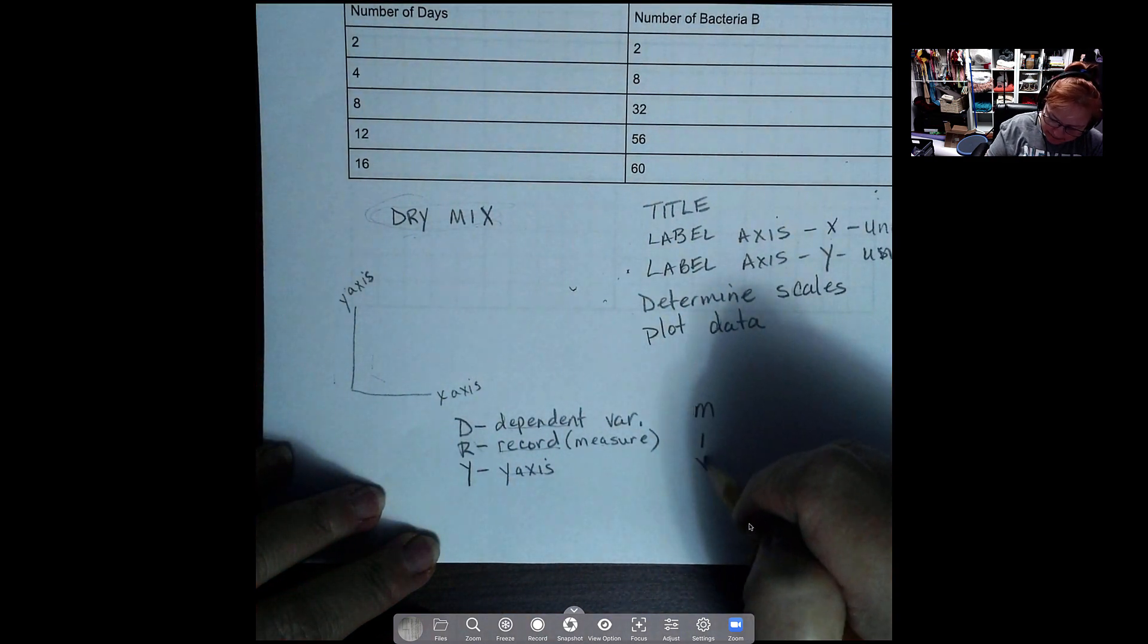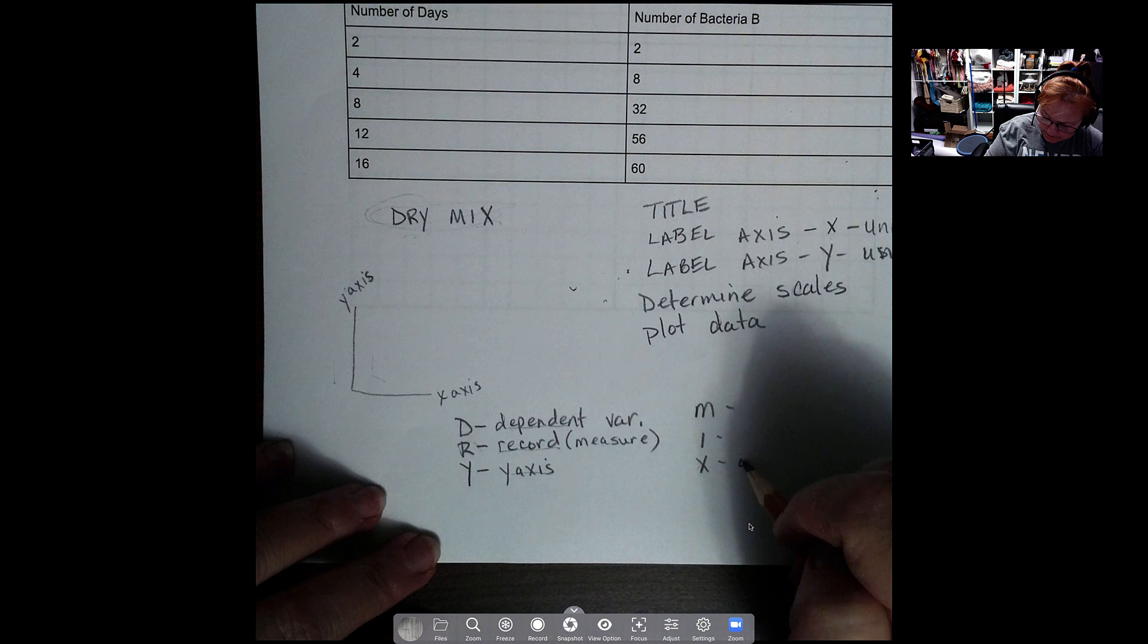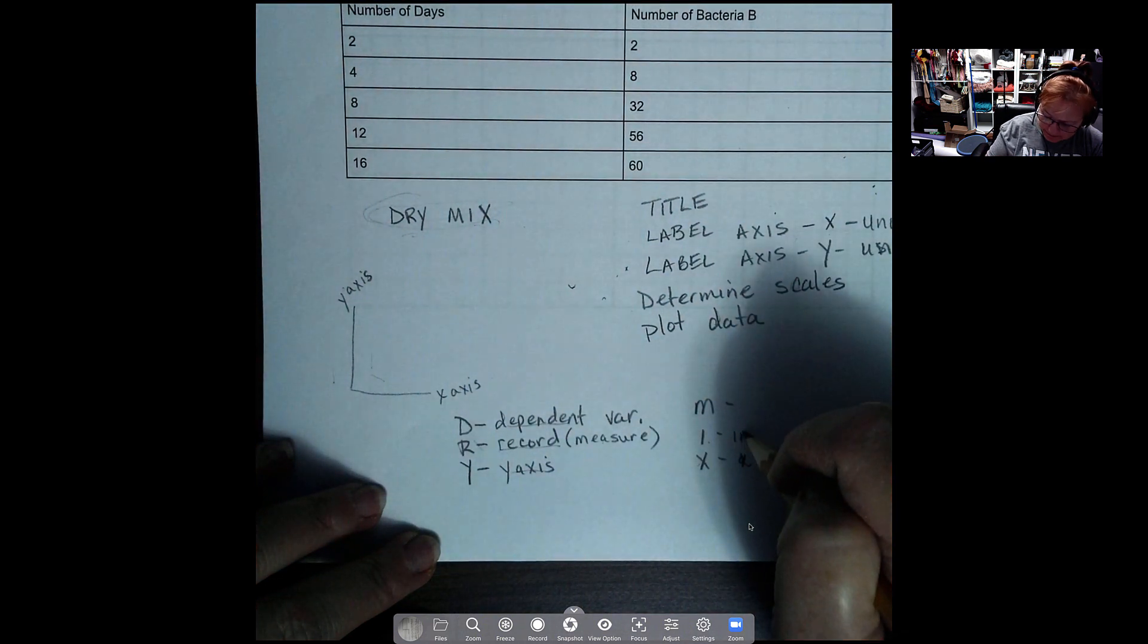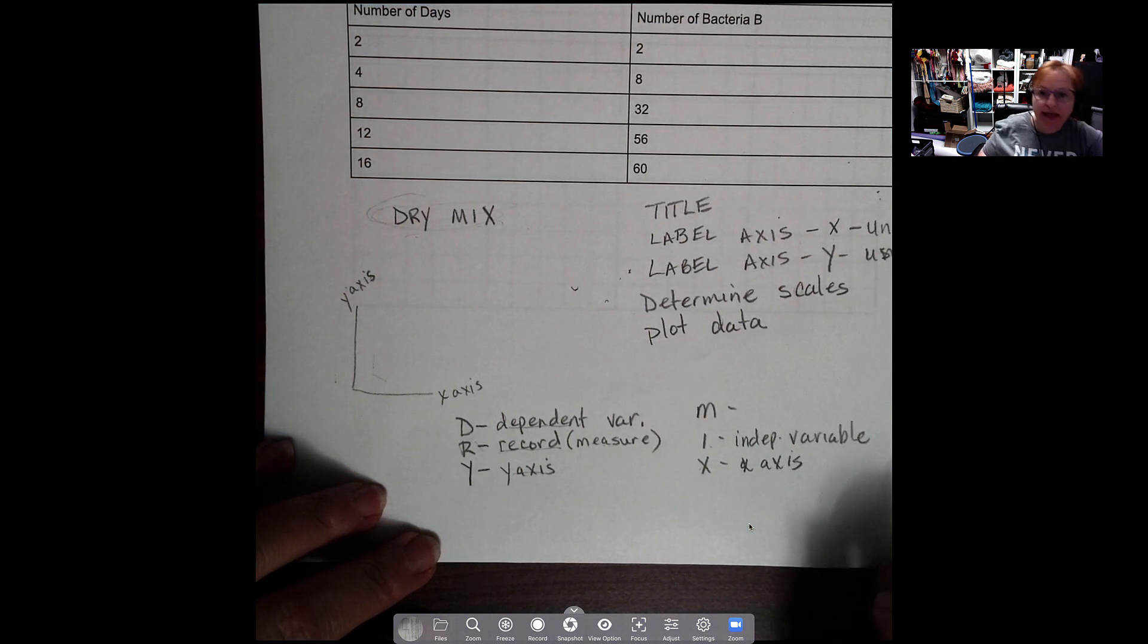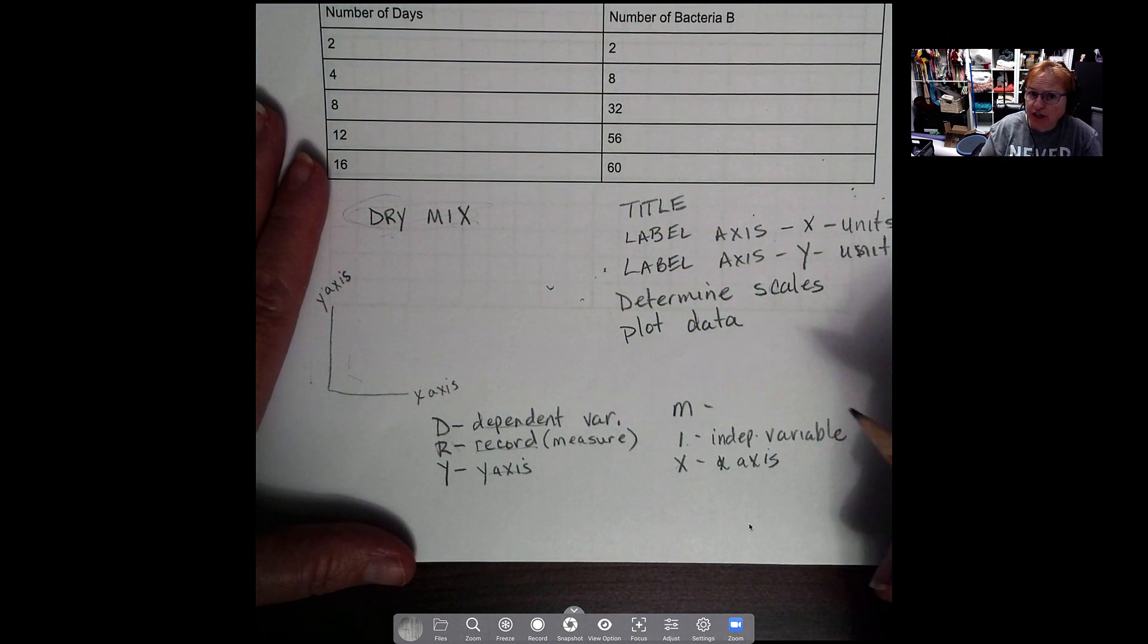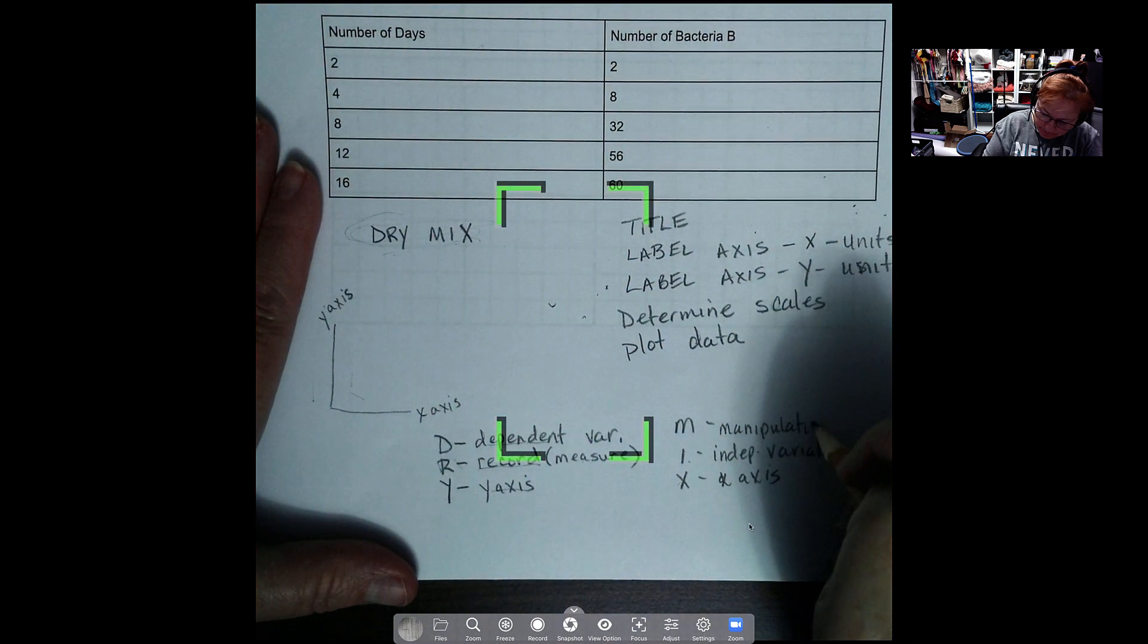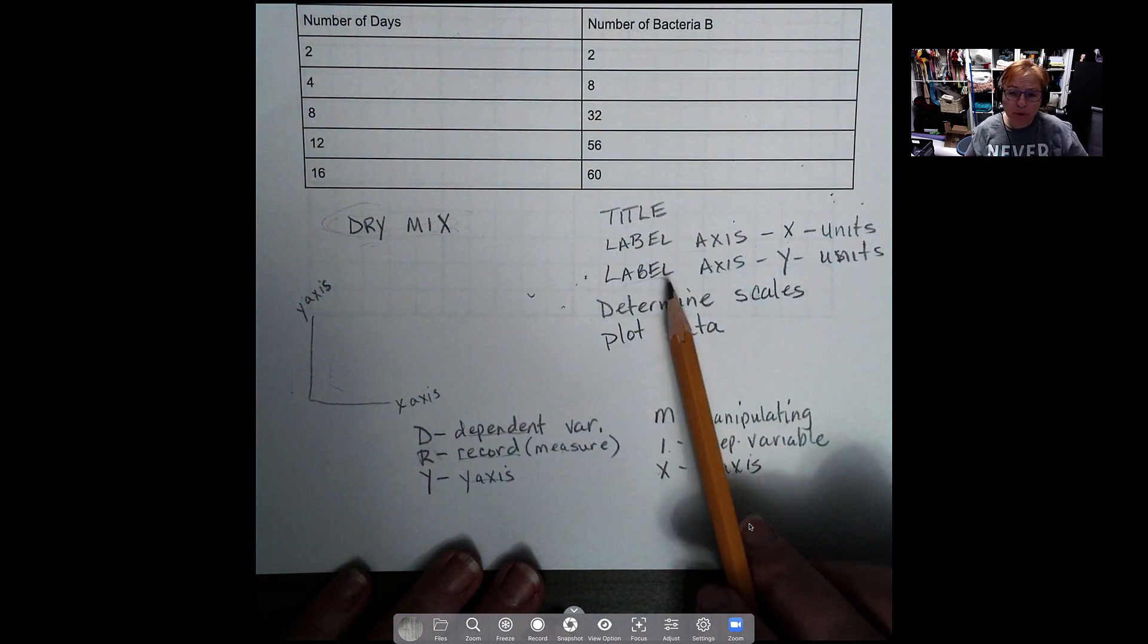And then MIX. Okay, obviously X is standing for the x-axis, the I is the independent variable, and the M stands for what you are manipulating or what you are changing, what you are allowing to happen here.